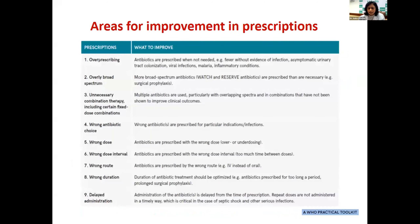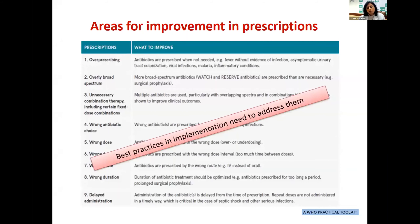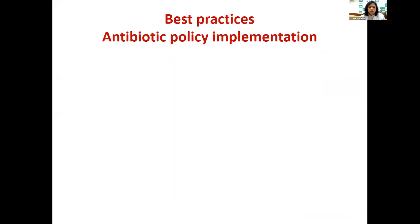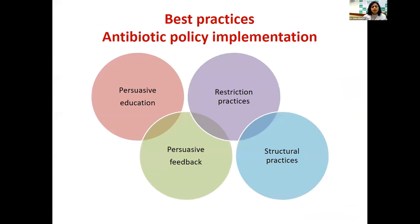There are many areas for improvement in prescriptions — from over-prescribing to overly broad-spectrum antibiotics, unnecessary antibiotics, and wrong-dose combinations. Implementation strategy and best practices need to address all of them in a stepwise manner. I've categorized best practices into four buckets: persuasive education, persuasive feedback, restriction practices, and structural practices.